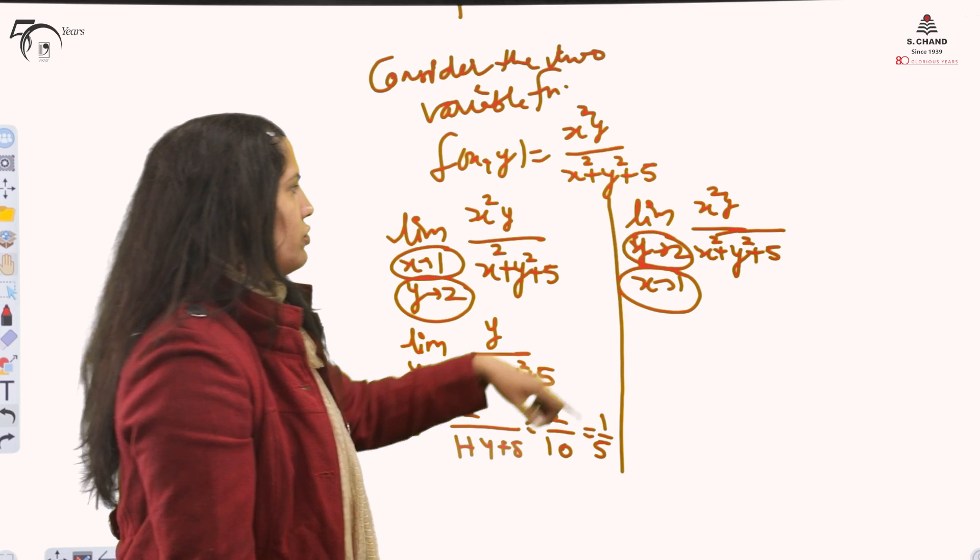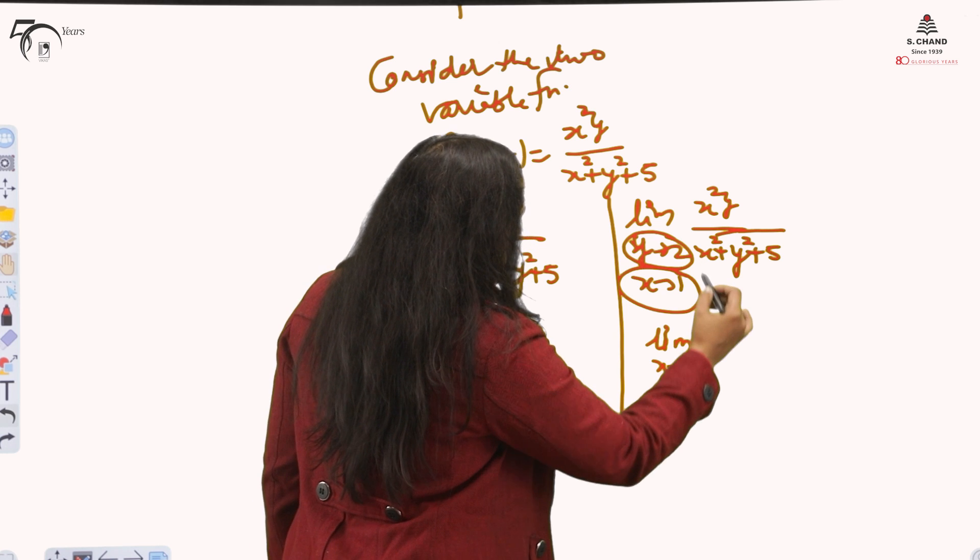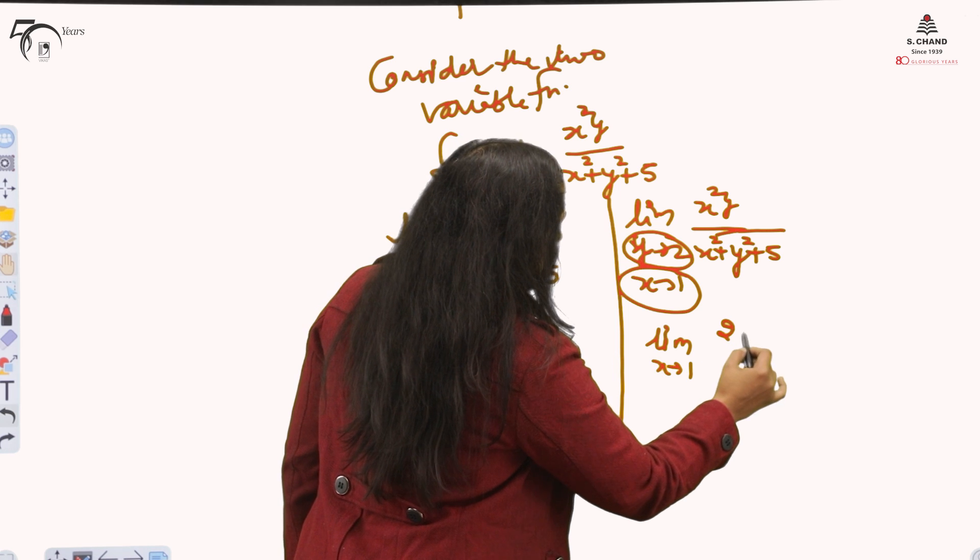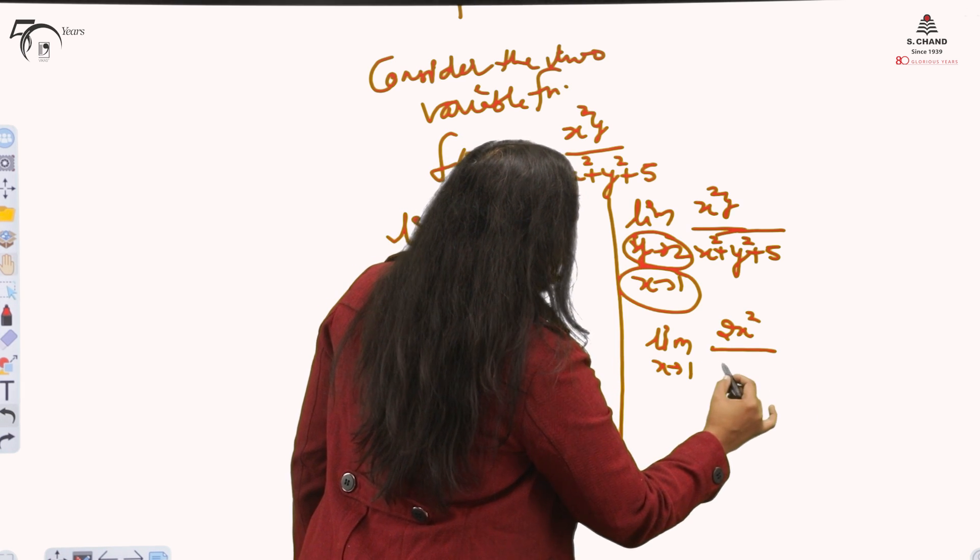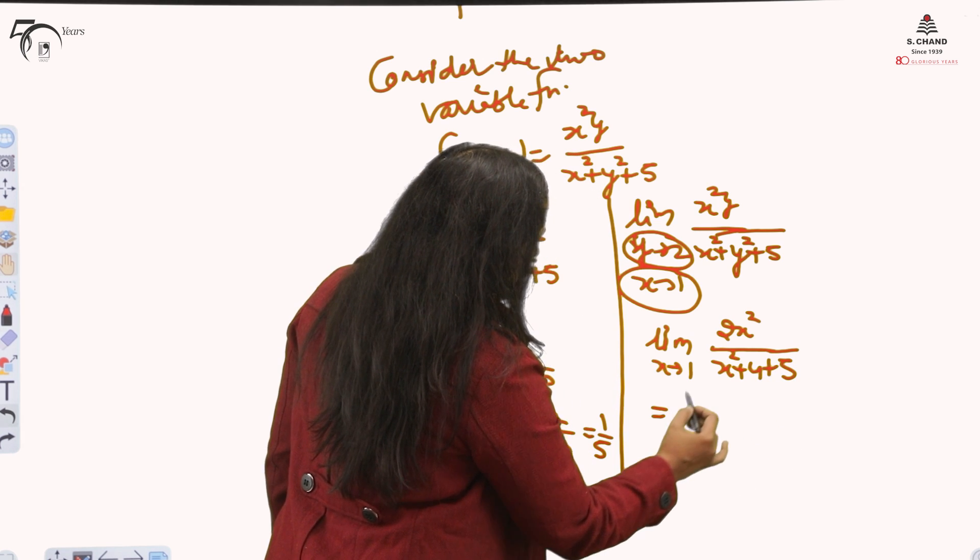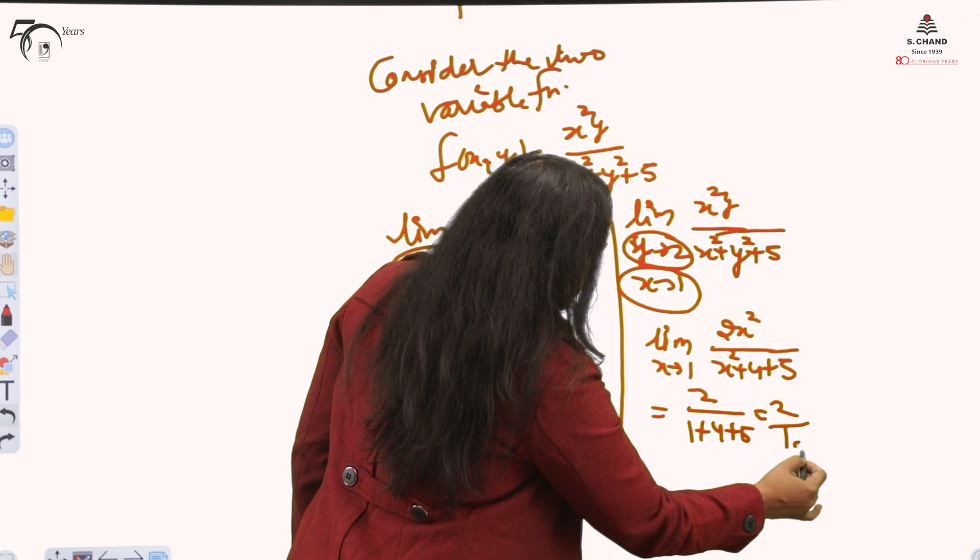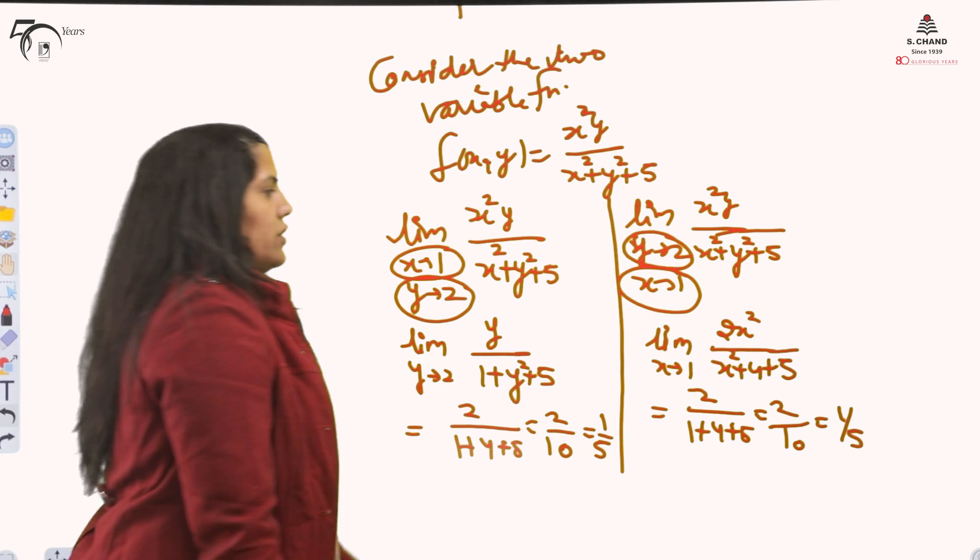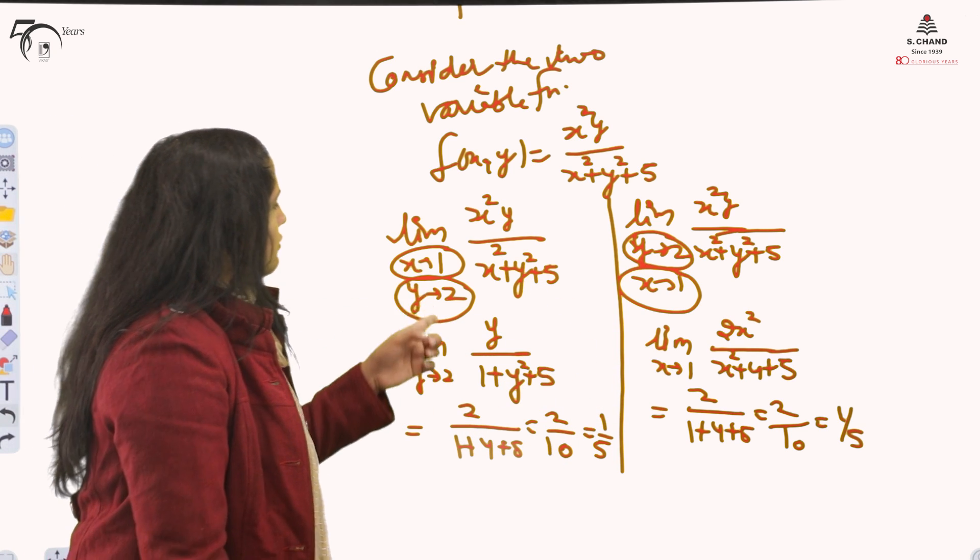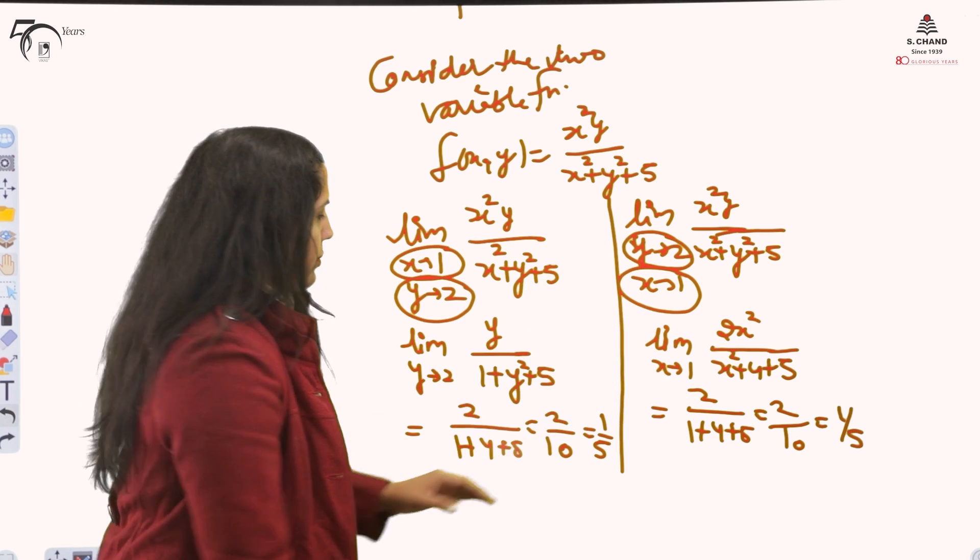Now, I will check this limit also. If I am just reversing, then the same thing I am getting or not. Limit x tending to 1. And first I will substitute, this time 2. This is 2x². And x² + 4 + 5. y I have substituted. Now x. You can see. These two limits you have calculated. And the result is same. It means, and these values are also non-zero. This is how we check. And we have checked it. That the limit exists. In this case.